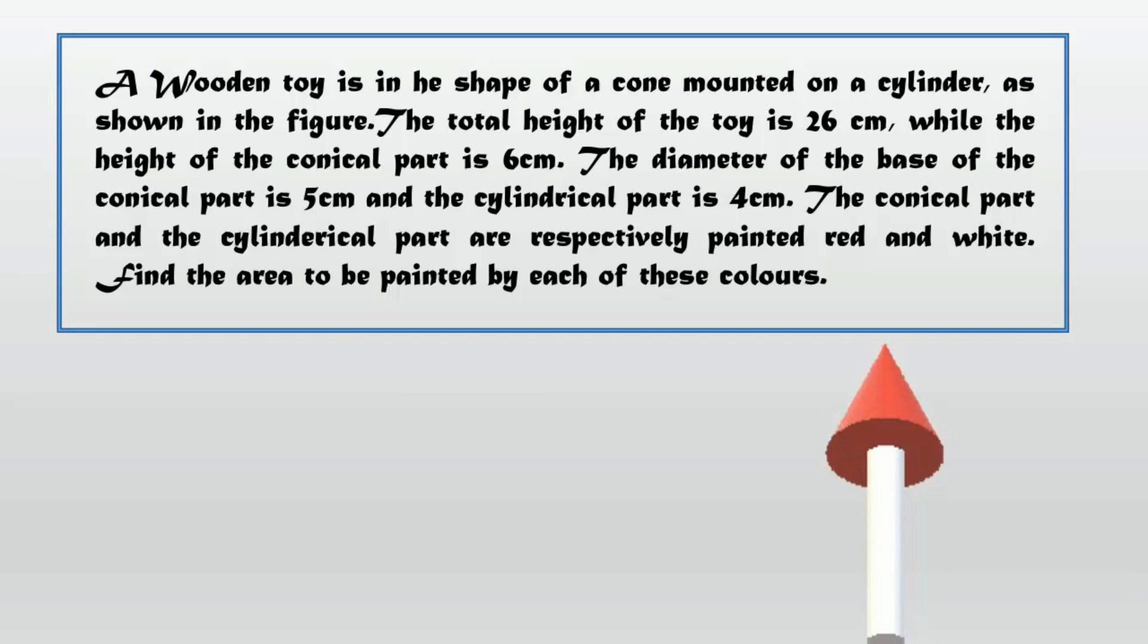The conical part and the cylindrical part are respectively painted red and white. Find the area to be painted by each of these colors.